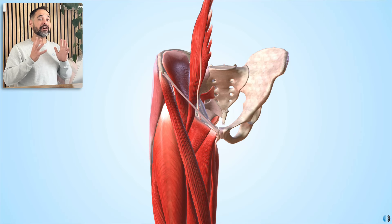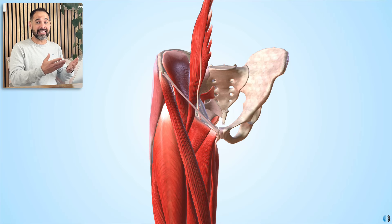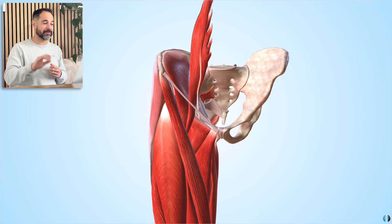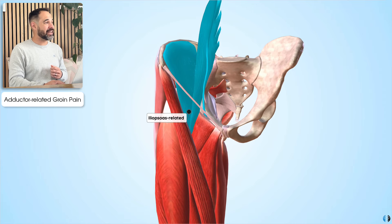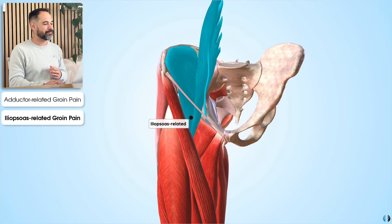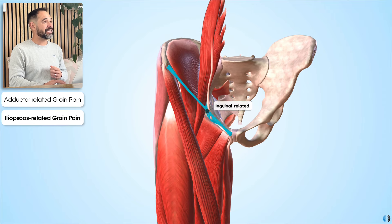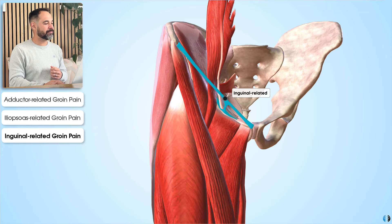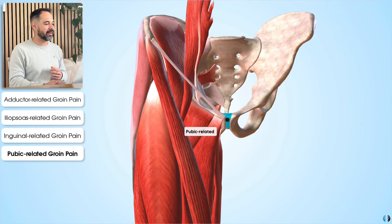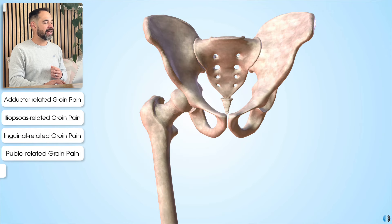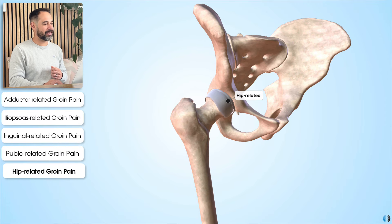What were the different types of groin pain discussed? There are five different ones. The first is adductor-related groin pain. The second is iliopsoas-related groin pain. The third is inguinal-related groin pain. Then we have pubic-related groin pain. And finally, we have hip joint-related pain.